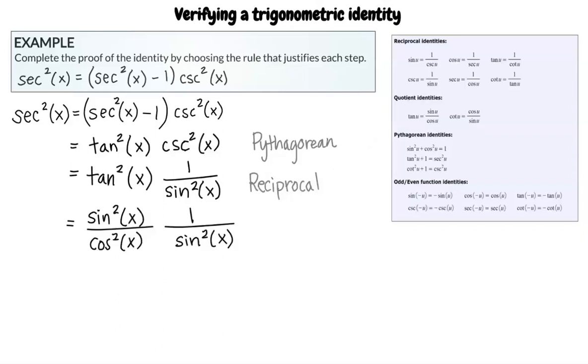What about the third step? Tangent squared of x is transformed to sine squared of x over cosine of x. It looks like this is done using the quotient identity that states that tangent of x equals sine of x over cosine of x. Great work!